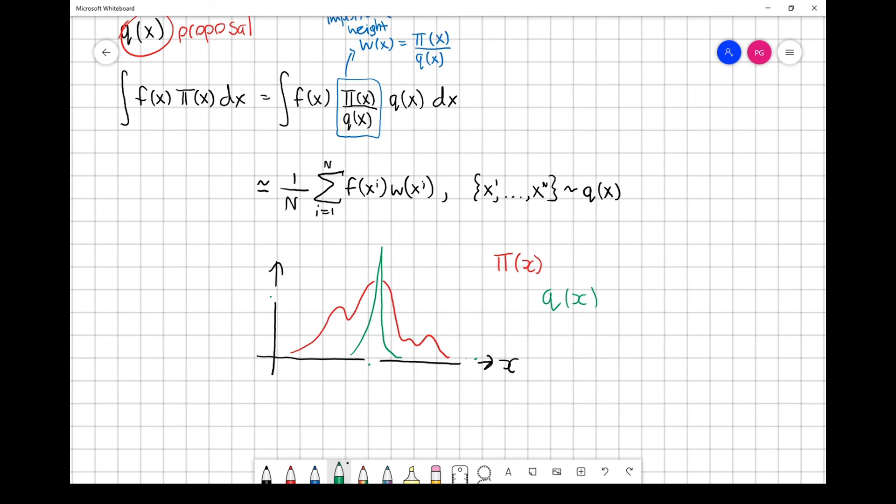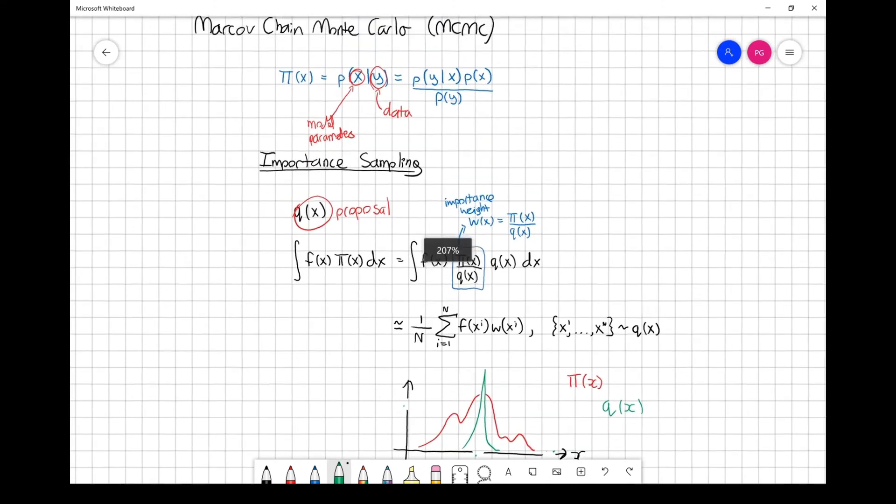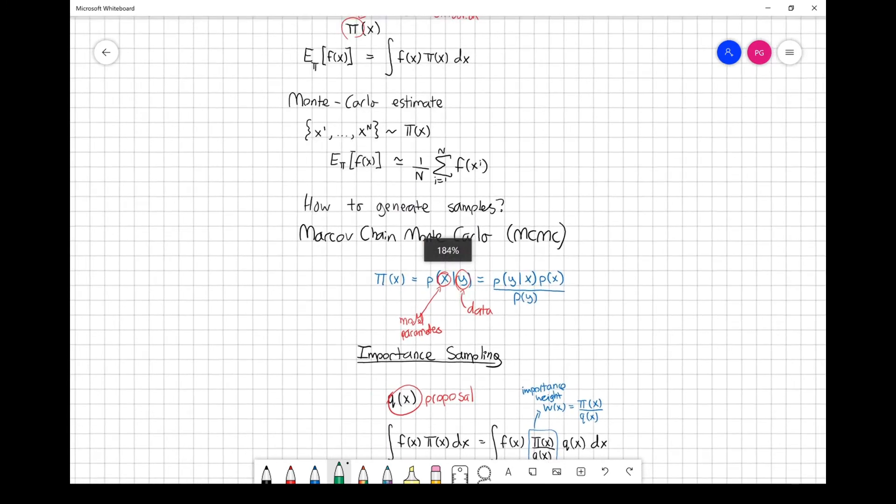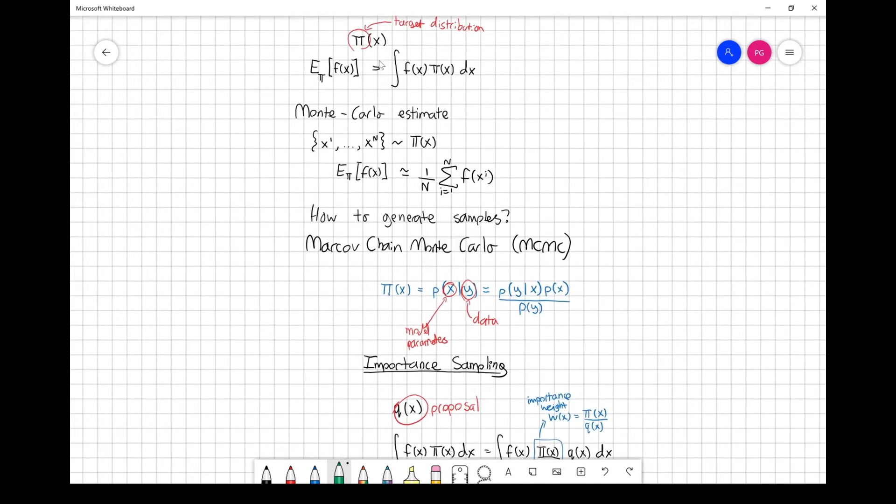I think that's far enough for this first video. To summarize, we've got some kind of target distribution where we want to estimate this quantity, f(x), or its expected value. One of the ways we can do that is by generating samples from the target and realizing a Monte Carlo estimate.